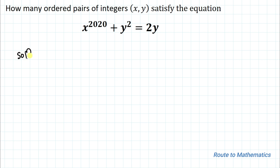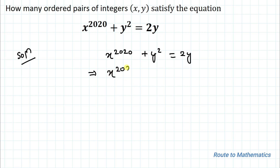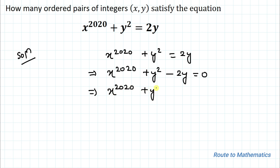Without any delay, let's start the solution. We have x to the power 2020 plus y squared equals 2y. In the next step, let's take 2y to the left hand side, so we have x to the power 2020 plus y squared minus 2y equals 0. Now let's add 1 to both sides of the equation.